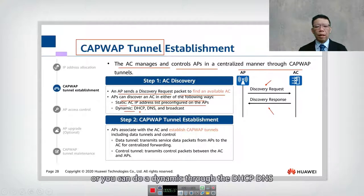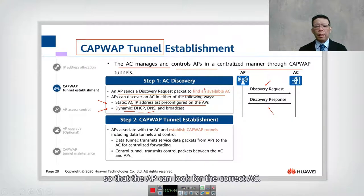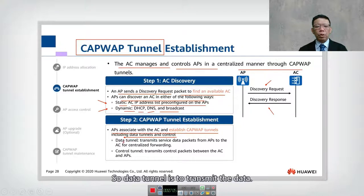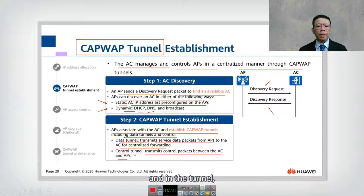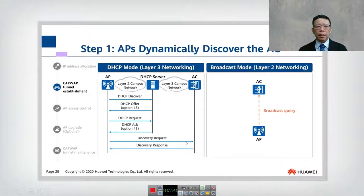The AP can discover the AC either through a static AC address pre-configured in the AP, or dynamically through DHCP, DNS, or broadcast. Dynamic mode is preferred; static mode can be used for more secure environments so the AP connects only to the correct AC. Once AC discovery is complete, step two is CAPWAP tunnel establishment, which includes both a data tunnel to transmit data and a control tunnel to transmit control packets between the AC and AP.